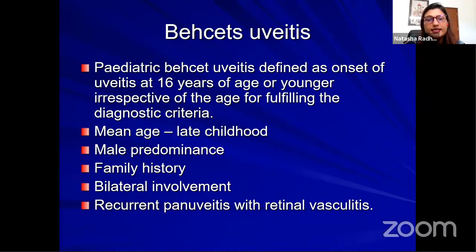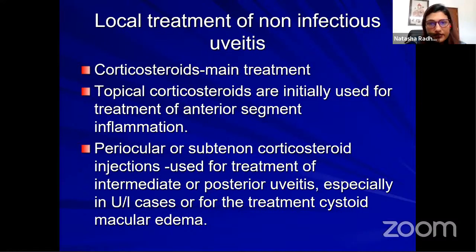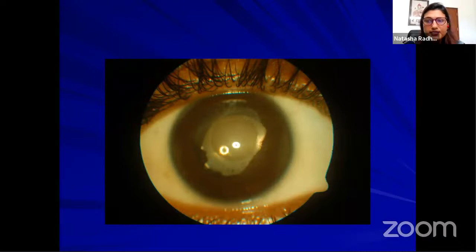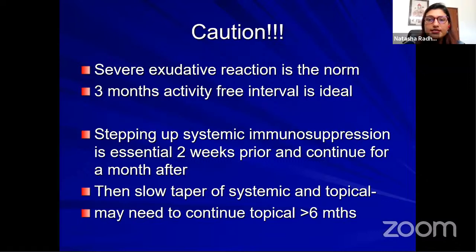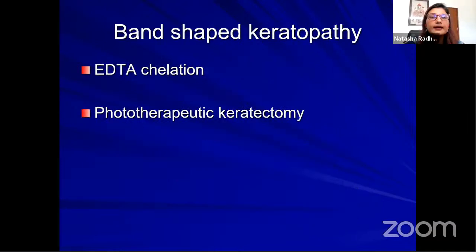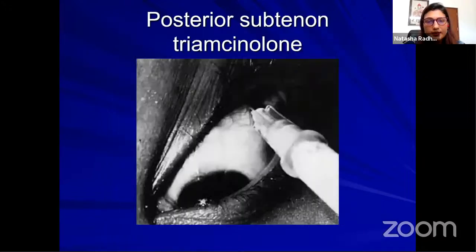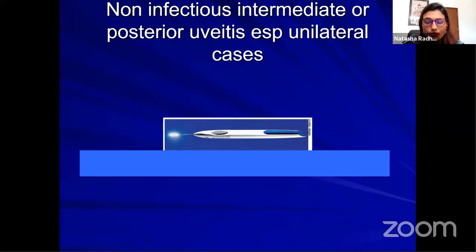Early-onset childhood sarcoidosis is a rare disease, different from sarcoid in older children, occurring in approximately half the cases; liver biopsy is an important diagnostic tool and patients must be differentiated from Blau syndrome (familial juvenile systemic granulomatosis, autosomal dominant) characterized by granulomatous polyarthritis and skin rash. Pediatric Behçet's uveitis is defined as onset at 16 years or younger with male predominance, family history, bilateral involvement; recurrent pan uveitis with retinal vasculitis.